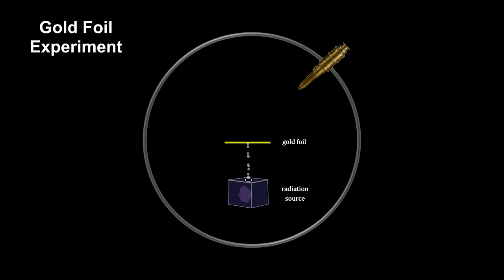This beam is directed at a very thin gold foil. A movable zinc sulfide screen is placed on the other side of the foil. Zinc sulfide flashes when hit by an alpha particle.